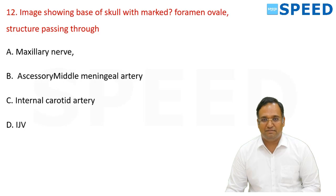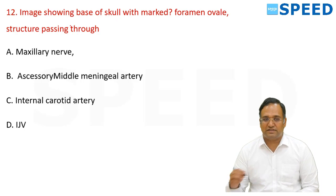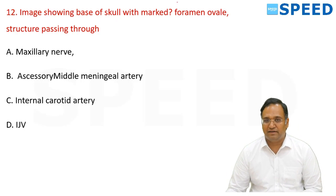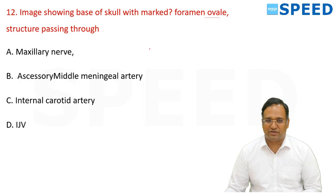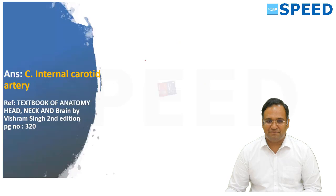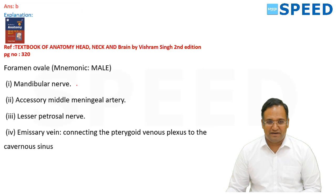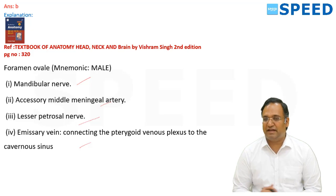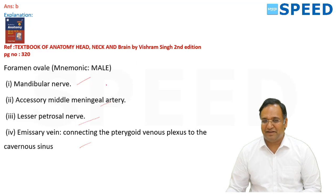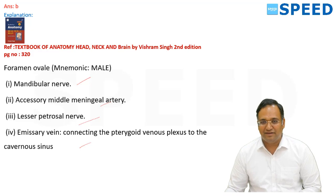An image showing the skull base with foramen ovale marked — which structures pass through foramen ovale? The structures passing through foramen ovale are: mandibular nerve (V3), accessory middle meningeal artery, lesser petrosal nerve, and emissary veins connecting the pterygoid venous plexus to the cavernous sinus. Answer accordingly based on the image provided.